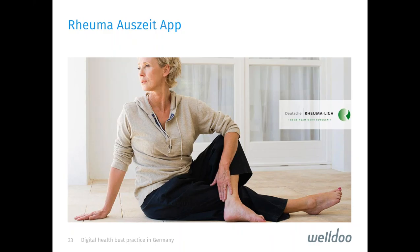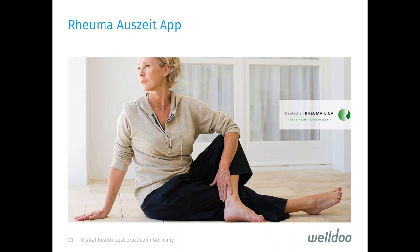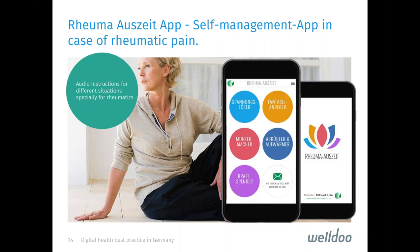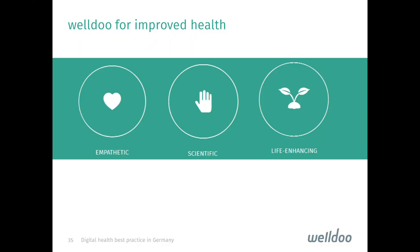The last example is the Rheumat Auszeit app, offered by the German Rheumatism League. It's a self-management app that helps with audio instructions against rheumatic pain. If the patient is in a car or plane, the app offers special exercises for a sitting position to release pain. This is basically how WellDo succeeds in the healthcare market — by developing empathetic, scientific, and life-enhancing apps that fulfill the needs of users, and by being creative and innovative within the rules of the German healthcare system. It's not about reinventing the system; it's about supporting patients and adapting to a change in society.